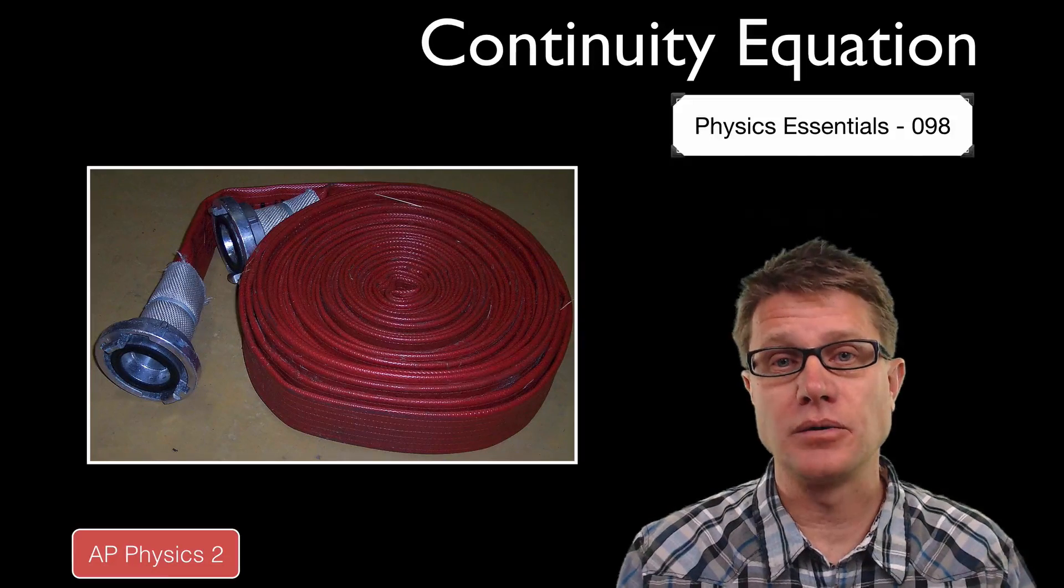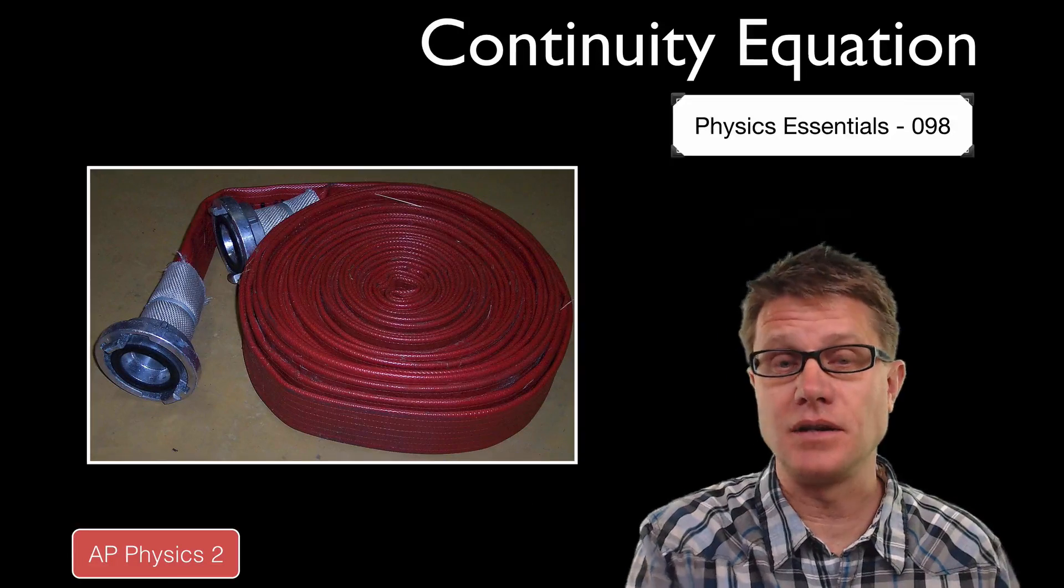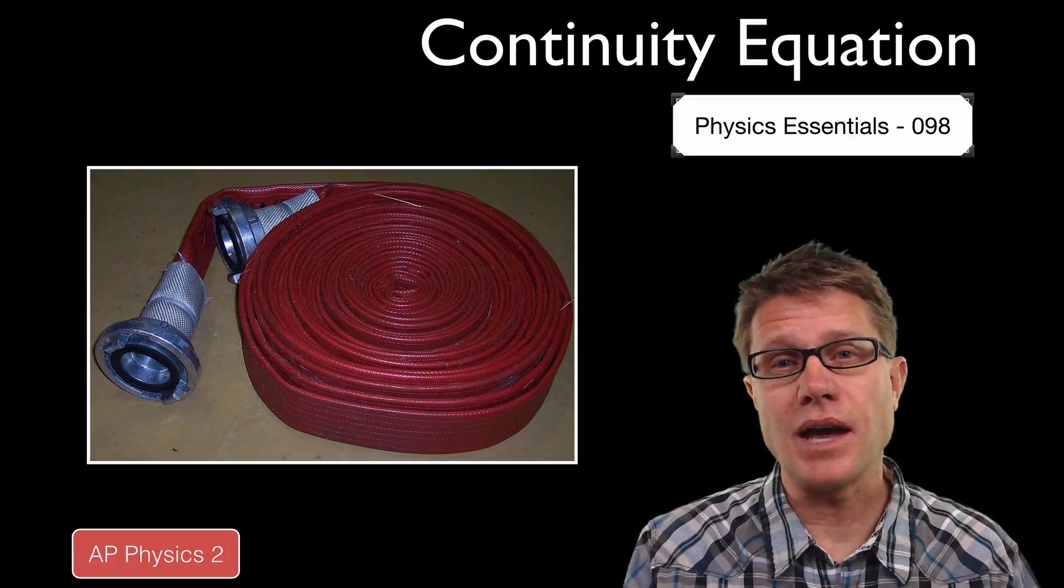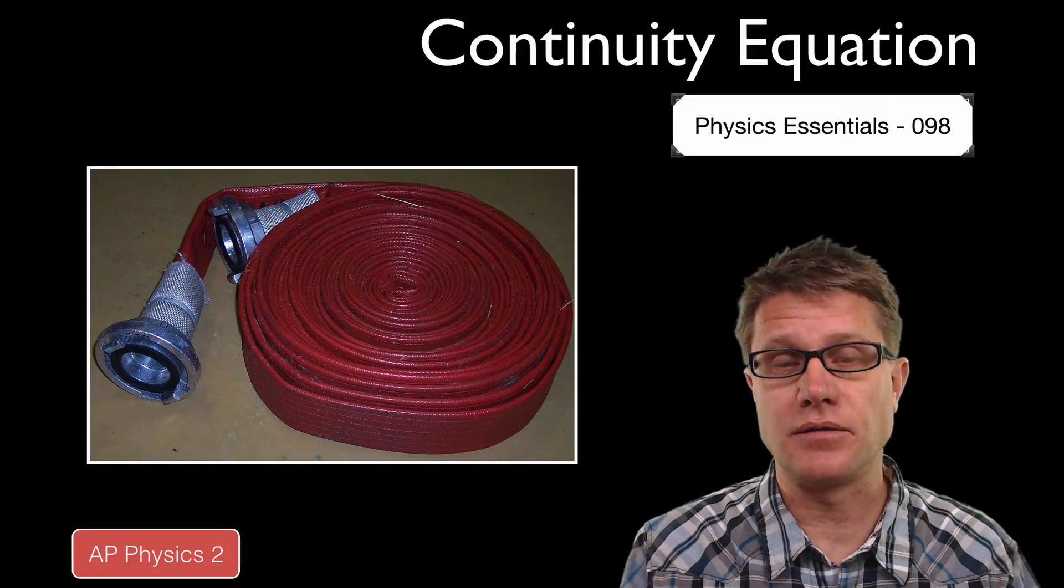So if we have a fire hose, the mass that goes in one side of the fire hose is equal to the mass that comes out the other side. Seems pretty intuitive. But what happens if we change the diameter of that fire hose? What if we put a nozzle on the front of it?